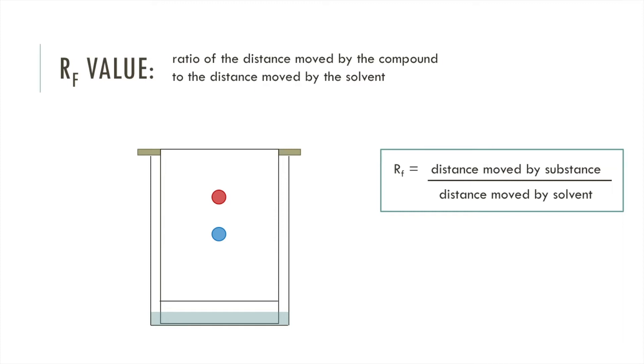In my example on the left we need to know how far the solvent has traveled. Let's say it traveled up to here. This is called the solvent front and let's say the distance was 100 millimeters. Now to calculate the RF value of the blue spot you would measure the distance from the middle of the spot to where it started on the line at the bottom. Let's say that distance is 50 millimeters. That means our RF is 50 divided by 100 so 0.5.